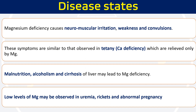Magnesium deficiency normally causes neuromuscular irritability, weakness, and convulsions. These symptoms are very similar to tetany seen in calcium deficiency and are relieved when magnesium is given. Other causes of magnesium deficiency include malnutrition, alcoholism, and cirrhosis of the liver. Low levels of magnesium may also be observed during uremia, rickets, and abnormal pregnancy.